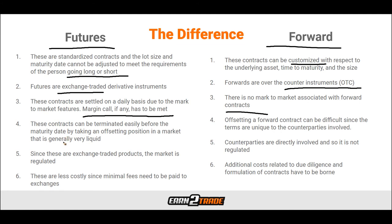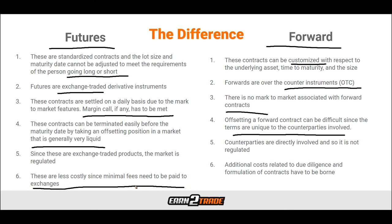Futures contracts can be terminated easily before the maturity date by taking an offsetting position in a generally very liquid market. Offsetting a forward contract can be difficult since the terms are unique to the counterparties involved. Since futures are exchange-traded, the market is regulated; with forward contracts, counterparties are directly involved so it is not regulated. Finally, futures are less costly since minimal fees need to be paid to the exchange. Forward contracts incur additional costs related to due diligence and contract formulation, generally making them more expensive.